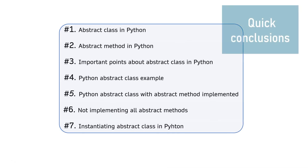An abstract class is a kind of model for other classes to be defined. It is not designed to construct instances but can be subclassed by regular classes. Abstract class is a blueprint for subclasses. Abstract classes can define an interface or methods that must be implemented by its subclasses.